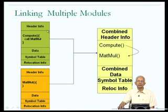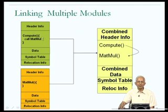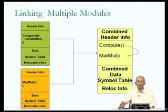What LD does is it takes the different object files which have to be merged into one and combines their headers into one header, and combines their code into one code. The upper block is the object file generated from my hello.c program and it contains a call to a function called matmul.